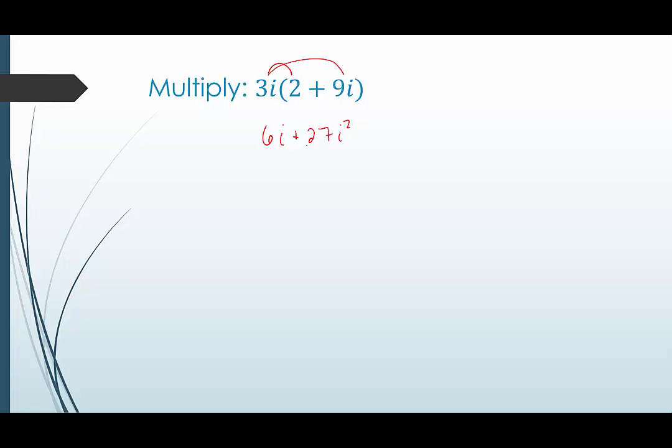Now i squared, as I just mentioned, is equivalent to negative 1. So this is like 27 times negative 1. 27 times negative 1 is a real number, so we're going to put the real number first and put the imaginary part second. So there it is, our product in standard complex form.